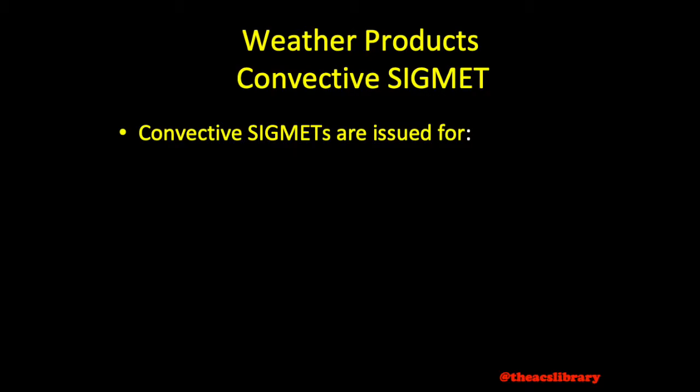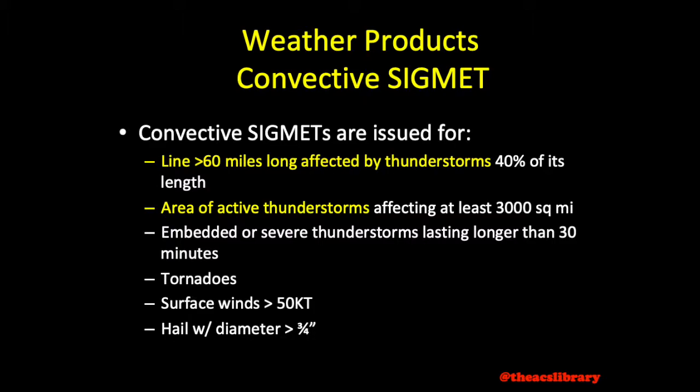Convective sigmets are issued if the following conditions are observed or expected to occur: a large line or area of active thunderstorms, embedded or severe thunderstorms expected to last more than 30 minutes, tornadoes, surface winds at a sustained speed above 50 knots, and hail with a diameter greater than three-quarters of an inch. Convective sigmets are formatted nearly identically to non-convective sigmets.